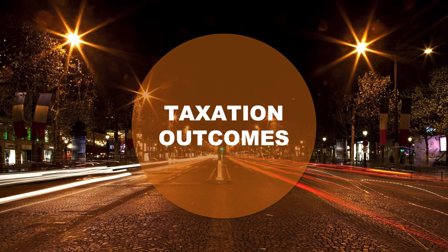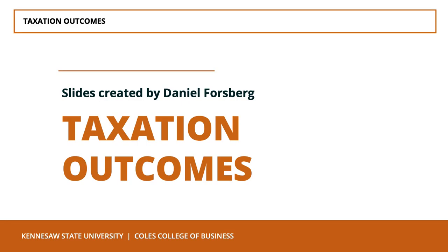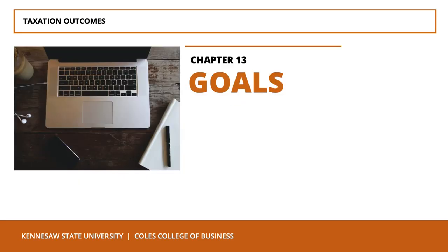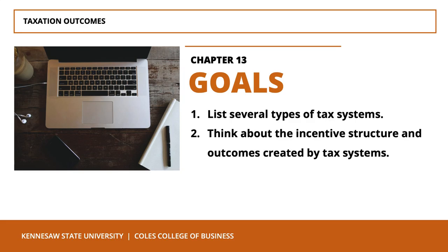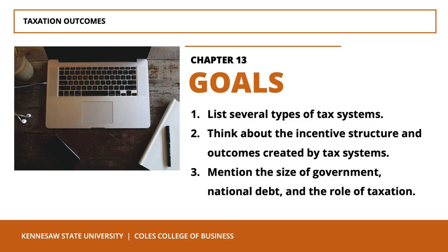In this lecture, I'll cover taxation outcomes in the U.S. I'll begin by discussing the sources of tax revenues and the various ways in which the government spends these revenues. Following that discussion, I'll provide a list of several types of tax systems and attempt to help you think about the incentive structure and outcomes generated by various tax systems. Additionally, I'll talk about the size of government as a percentage of GDP, the national debt, and the role of taxation in society.